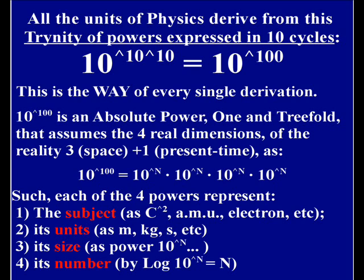In fact, all the units of physics derive from this trinity of powers expressed in cycles: 10 rise to 10 rise to 10, that is equal to 10 rise to 100.